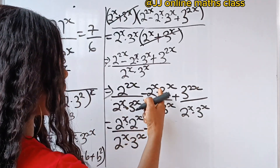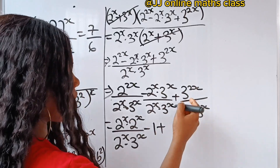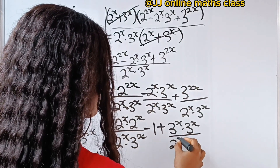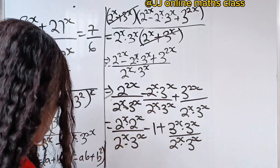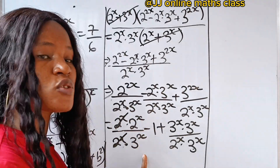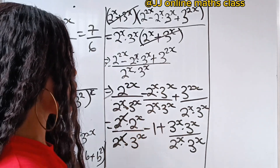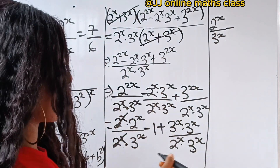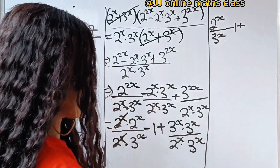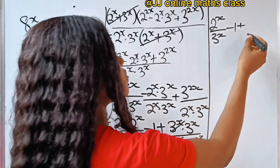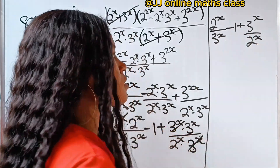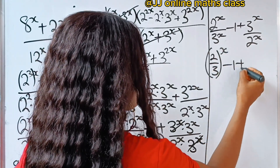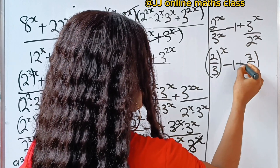The middle term divided by itself gives us 1. For the first fraction, 2^x · 2^x divided by 2^x · 3^x, one 2^x cancels and we get 2^x over 3^x. For the last fraction, 3^x · 3^x divided by 2^x · 3^x gives us 3^x over 2^x. We can rewrite this as (2/3)^x minus 1 plus (3/2)^x.